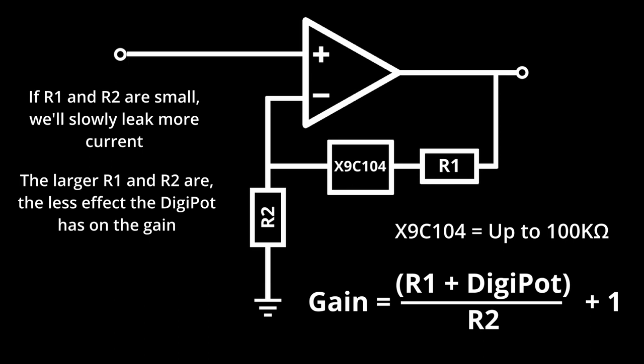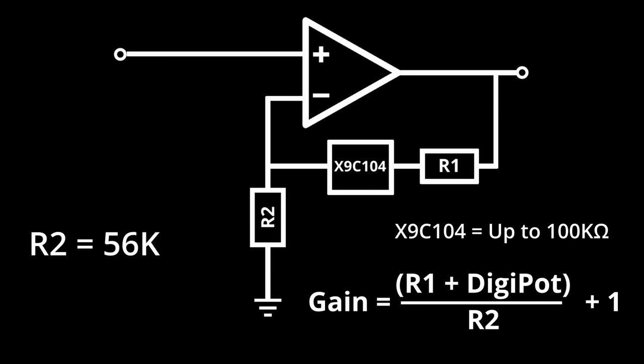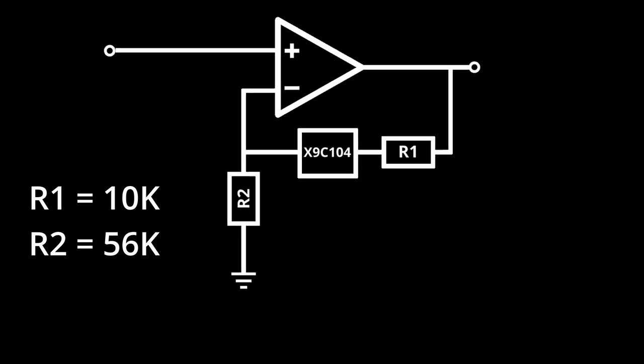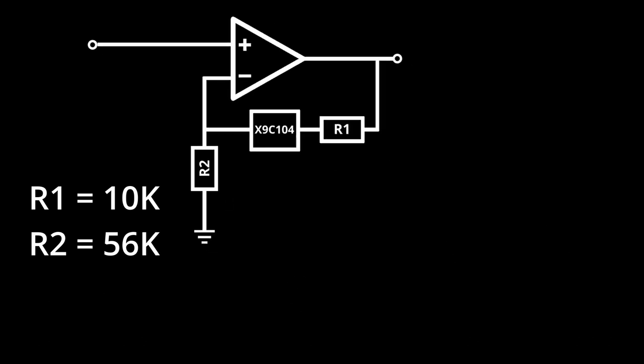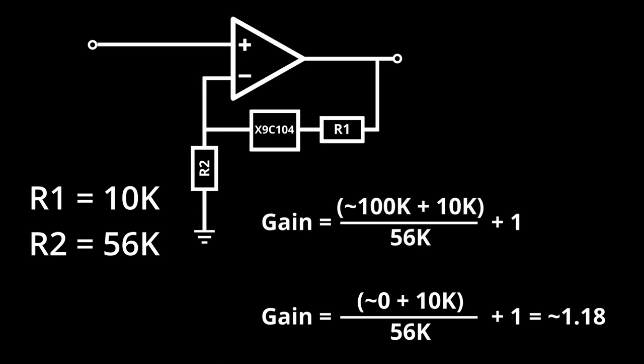After some experimentation of trying different values and seeing how they affected the gain on the oscilloscope, the values I ended up with are 56k for R2 and 10k for R1. This means when our digipot is low, our gain will be near 0 plus 10k divided by 56k plus 1, or about 1.18, and when our digipot is high, the gain will be 100k plus 10k divided by 56k plus 1, about 3.